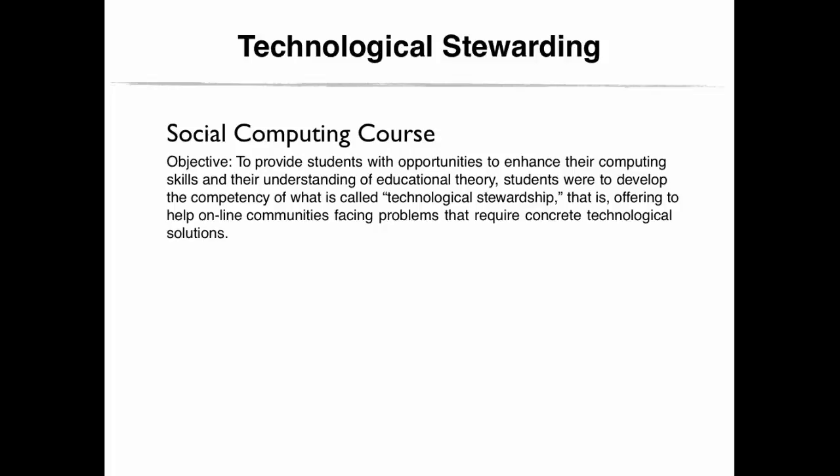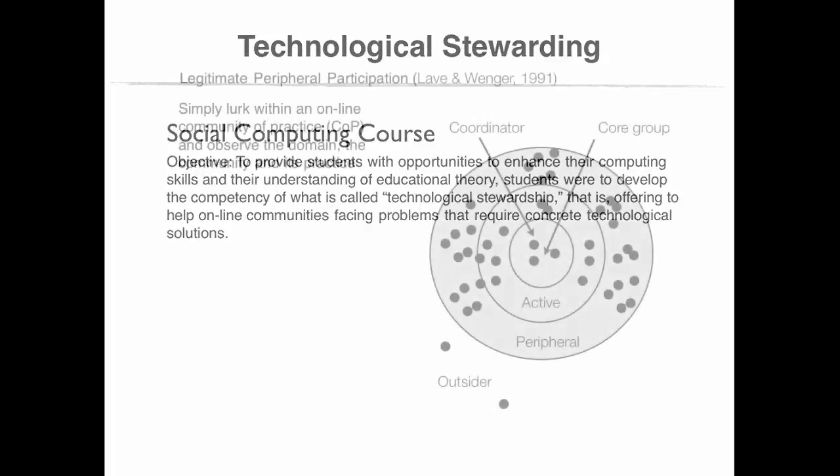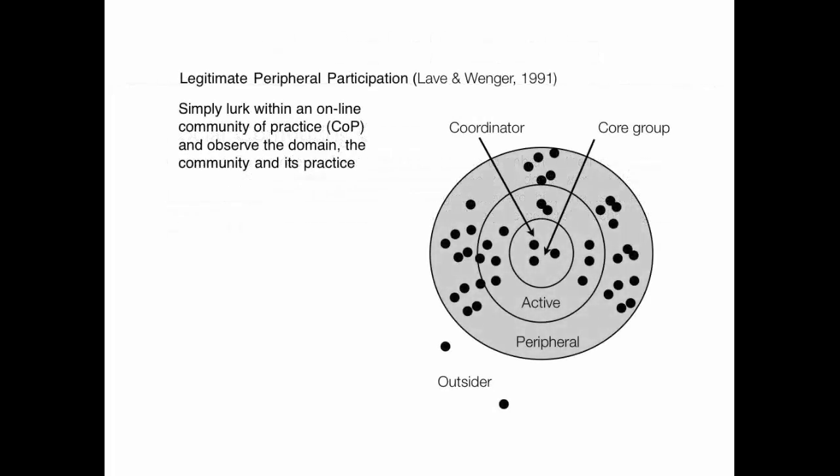Here is how the course worked. The objective of the course was to provide students with opportunities to enhance their computing skills and their understanding of educational theory. Students were to develop the competency of what is called technological stewardship — that is, offering to help online communities facing problems that require concrete technological solutions. To develop their technological stewardship, students had the choice of participating in an online community of practice or engaging in legitimate peripheral participation, which means to simply lurk within an online community of practice and observe the domain, the community, and its practice.